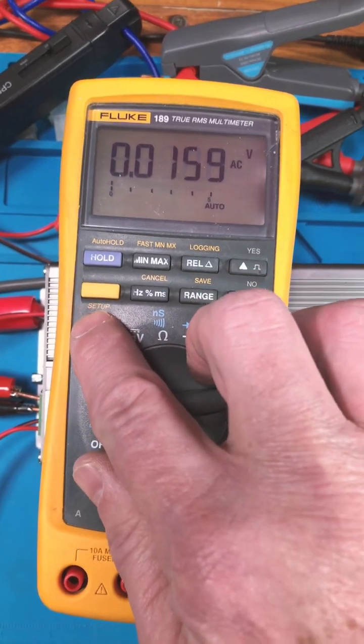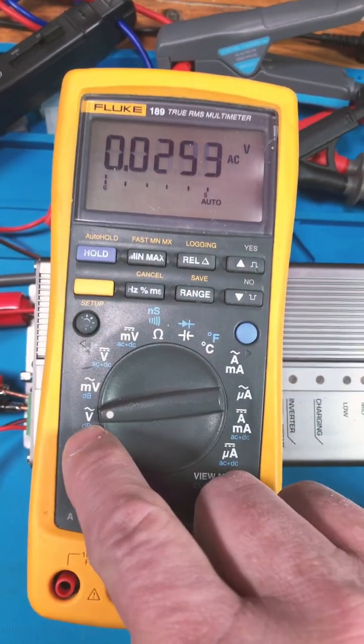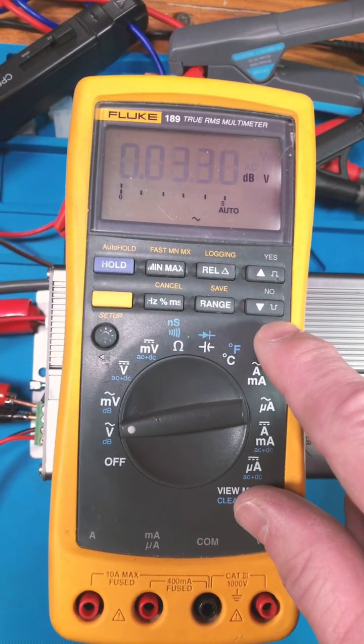Look at this, backlight display, two different levels, decibel function the Fluke 87 does not have.